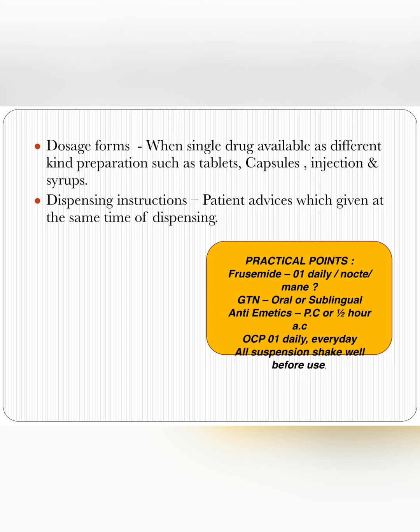Dosage form refers to when a single drug is available in different kinds of preparations, such as tablets, capsules, injections, and syrups. As you all know, there are some drugs available in different dosage forms — for example, cetirizine is available in both tablet and syrup form.